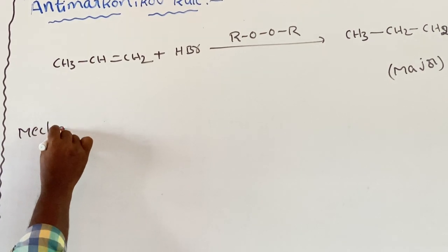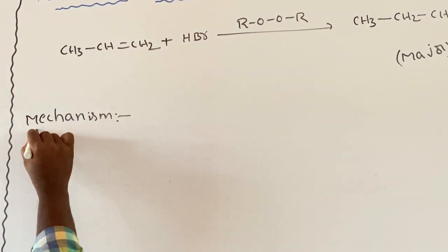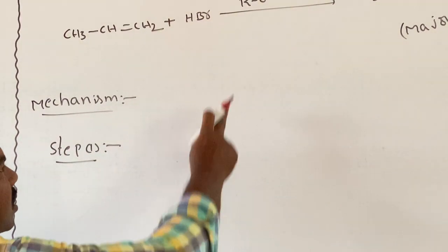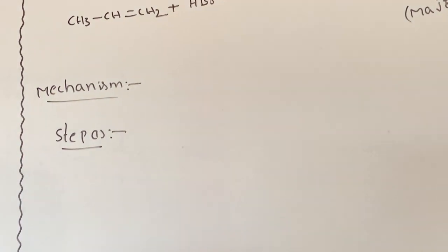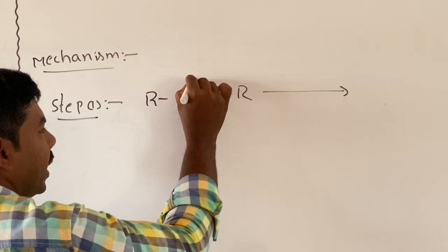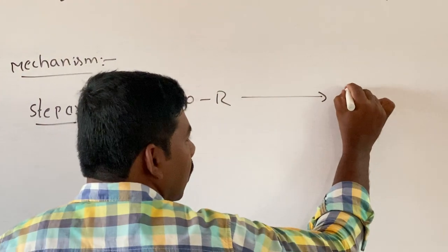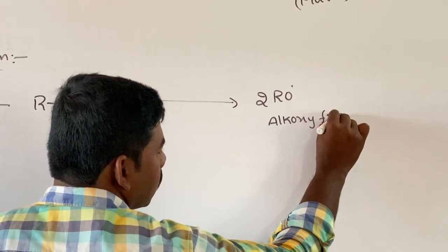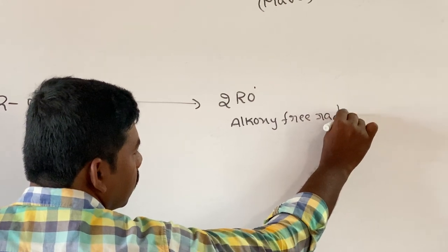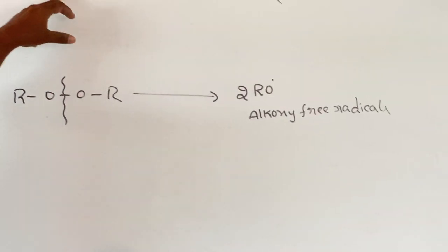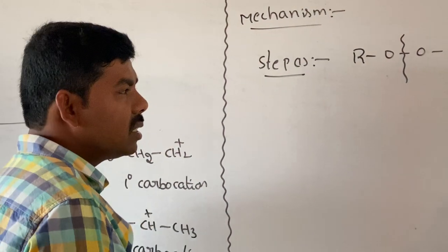Step 1: peroxide undergoes homolytic bond-breaking to give alkoxy radicals. R-O-O-R undergoes bond-breaking to give two alkoxy radicals (RO•). These alkoxy radicals further react with hydrogen bromide.